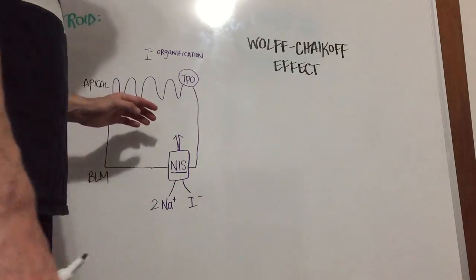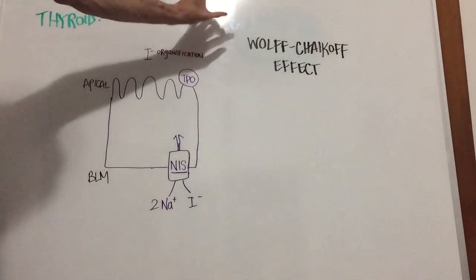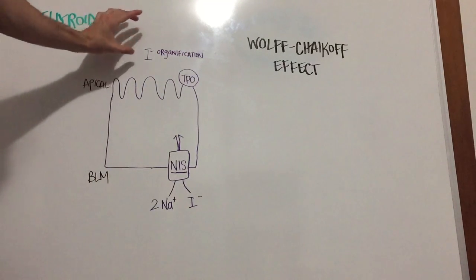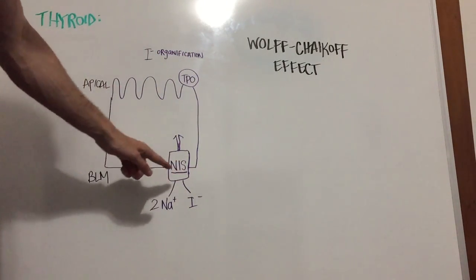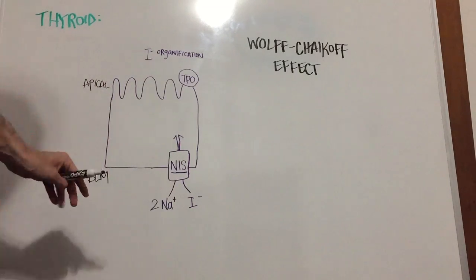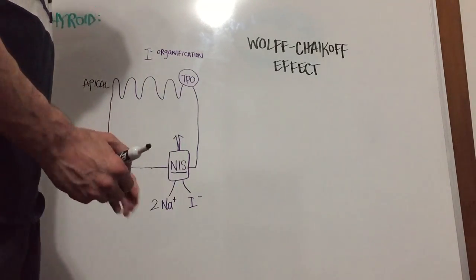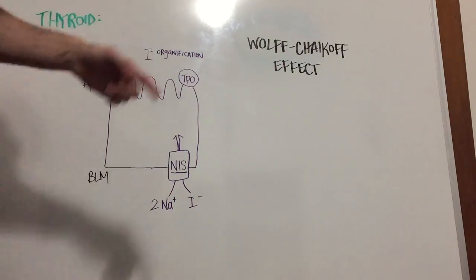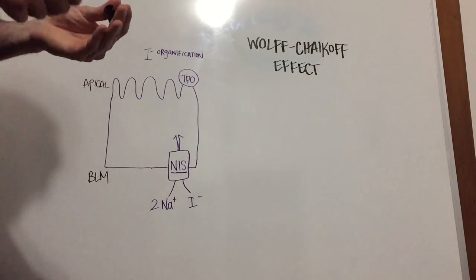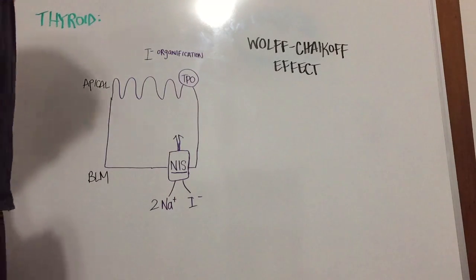This is accomplished through the organification process that happens in the lumen through TPO. The way iodide is able to get here is through the NIS, sodium iodide symporter, which is found on the basolateral membrane. This takes two sodium and one iodide into the cell, which is then transported into the lumen of the thyroid gland in order to make T4 and T3.